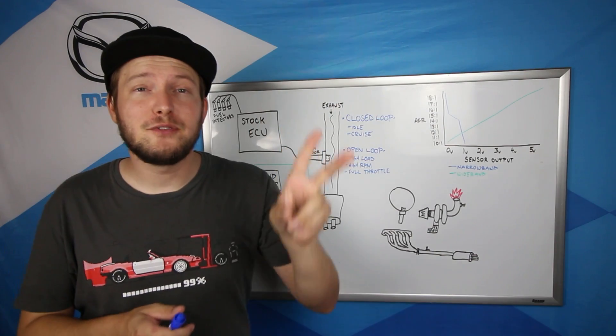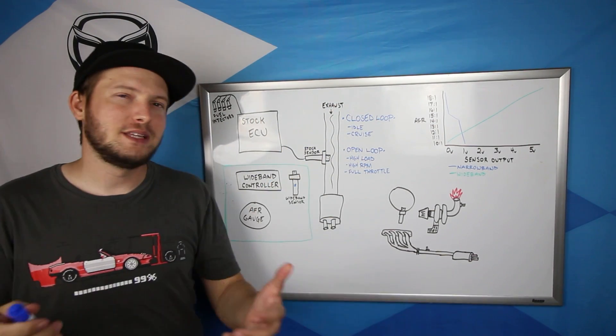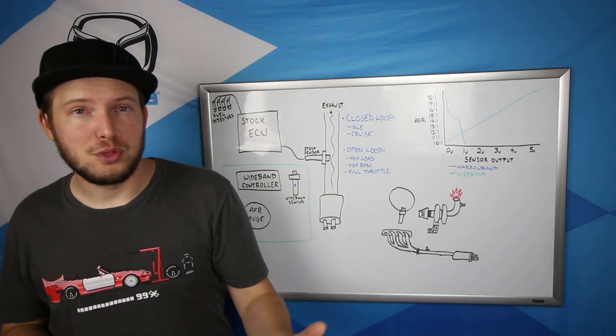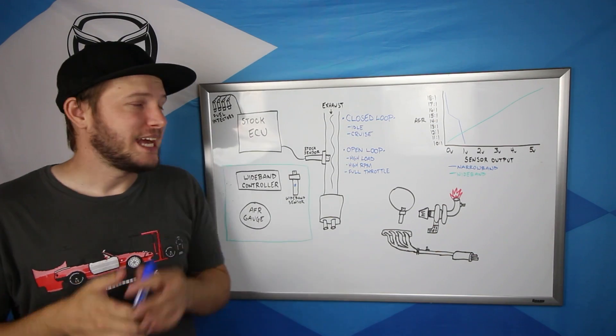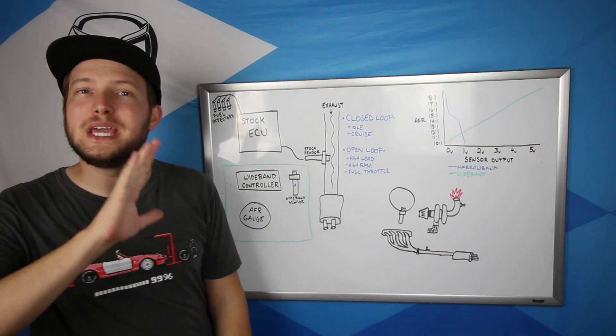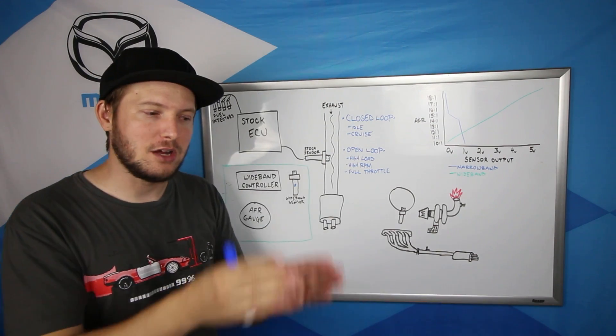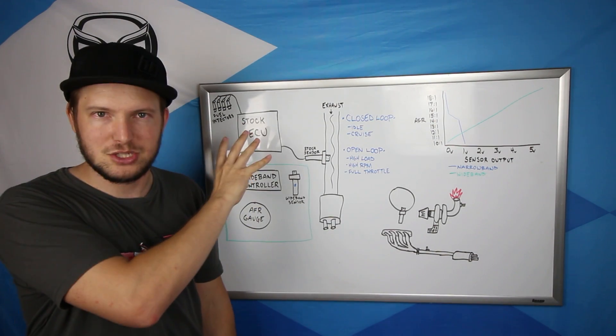So the ECU has two different modes for fueling based on the situation. During what's called open loop, this is when the engine is under a high load or in high rpm, full throttle, attempting to pass a city bus if you're in a Miata. During this mode the ECU ignores the oxygen sensor. It just dumps a set amount of fuel based on the load and the rpm and that information is just programmed into the tune.